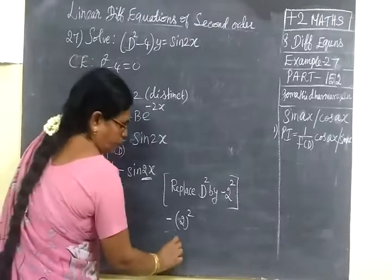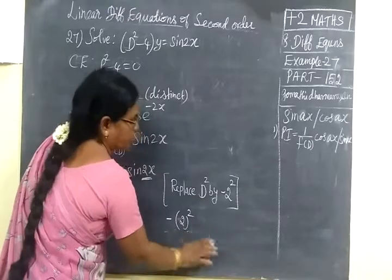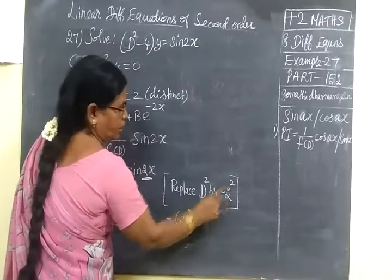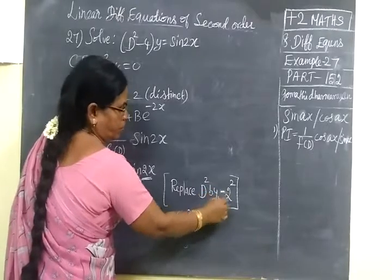Many of them are writing minus 2 whole square. Note that. Replace D square by minus 2 square. The minus is in the very little, that means minus 4.